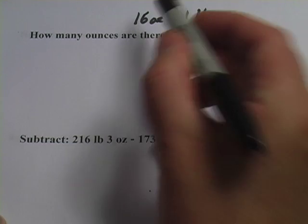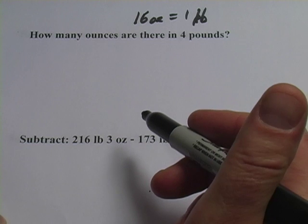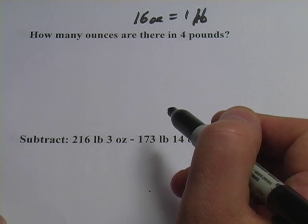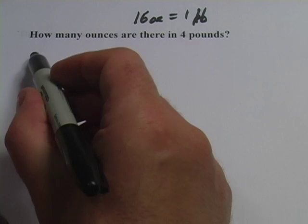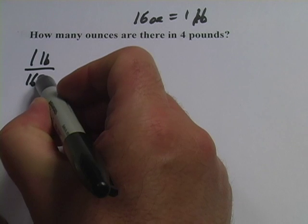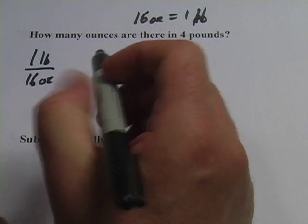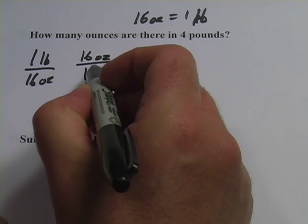And what I like to do is write this as a ratio, a special kind of ratio that people either call a unit multiplier or I like to call a conversion factor. And you can write this ratio in either of two ways. You could have pounds on top, 1 pound is 16 ounces.